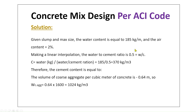With the water-to-cement ratio of 0.50 and water content of 185 kg/m³, the cement content is equal to water content divided by the water-to-cement ratio, which evaluates to 370 kg per cubic meter.